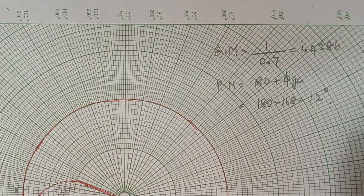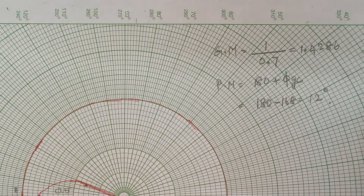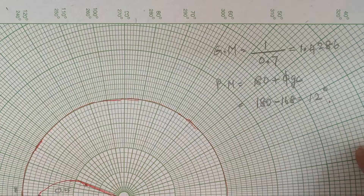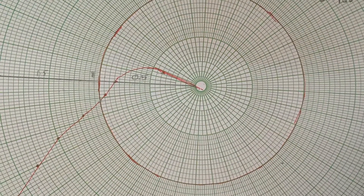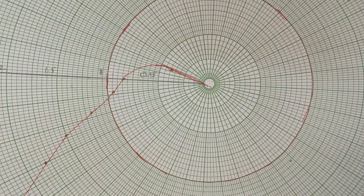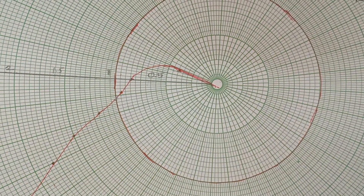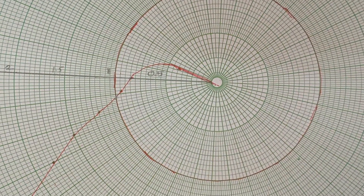So this is your gain margin and this is your phase margin. The problem gets over here. Hope you people understand the concept well. If you have any doubt, let me know in the comment section. Thank you.